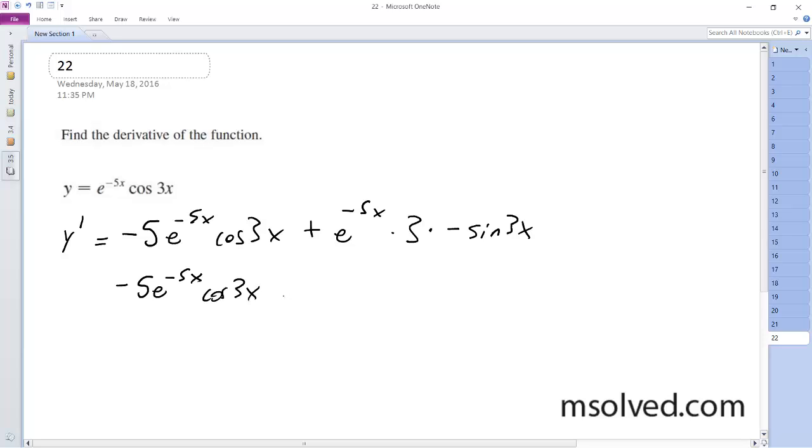Minus 3 sine 3x, e raised to the negative 5x.